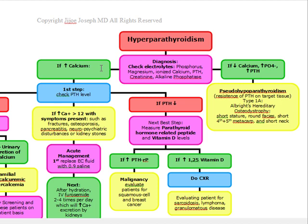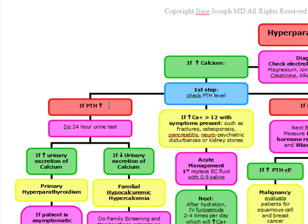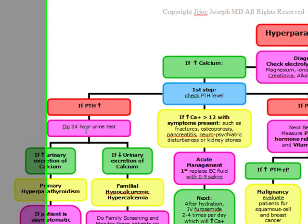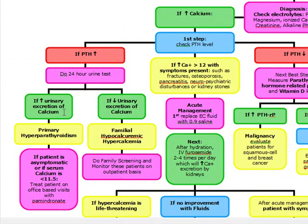If you see an elevated calcium and the patient does not come in with symptoms, this is when you're going to follow the algorithm. Remember, this is for asymptomatic patients. First thing you want to do is check the PTH level. If the PTH is elevated and there are no symptoms, do a 24-hour urine test. On the 24-hour urine test, if there's an elevation of urinary excretion of calcium, this is when we can make our diagnosis of primary hyperparathyroidism, usually secondary to an adenoma.